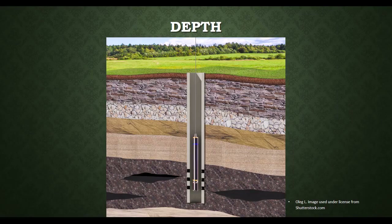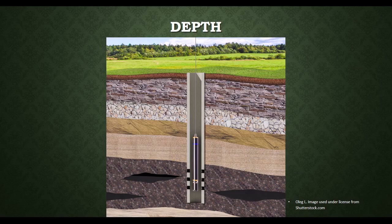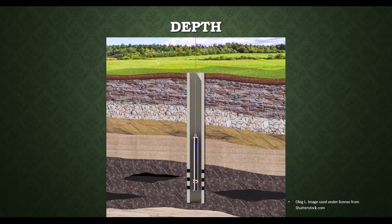Now, aquifers come in many different shapes and sizes, as well as depths. Some aquifers are close to the surface, while others are hundreds of feet deep. Aquifers can even change depths depending on how much water is in them. In especially deep aquifers, the water may have been there for a very long time — hundreds of years in fact. It's a good thing water doesn't have an expiration date.